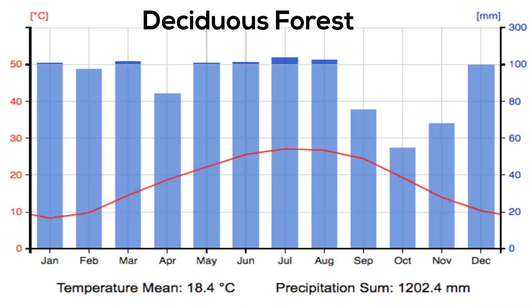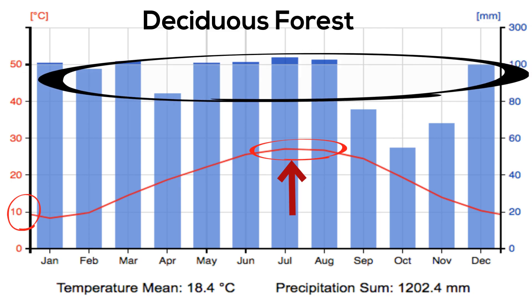Next, this biome has a temperature graph that shows it has seasons. The winters aren't frigid and bitter, and the summers aren't super hot, and you have rainfall all year.